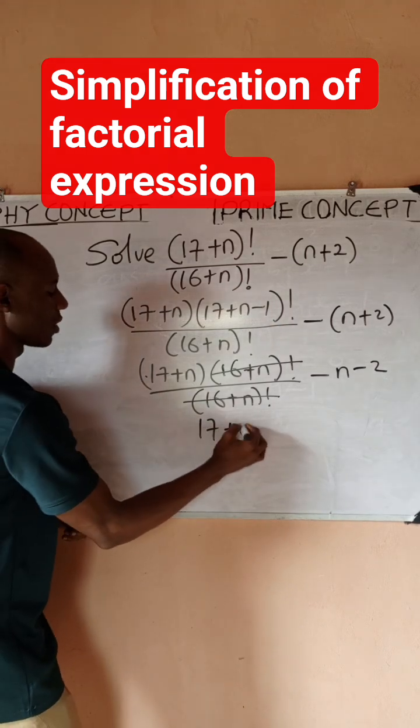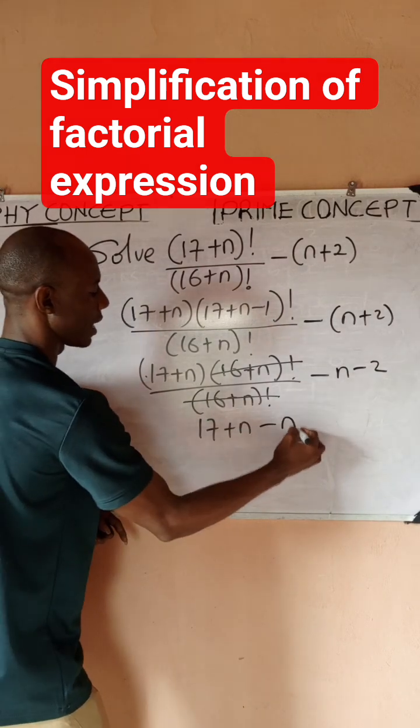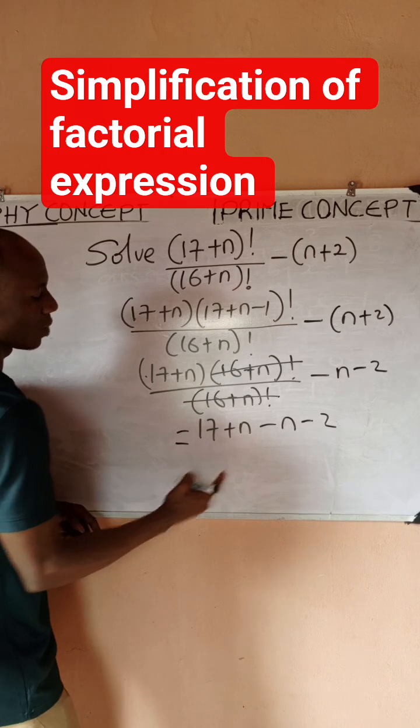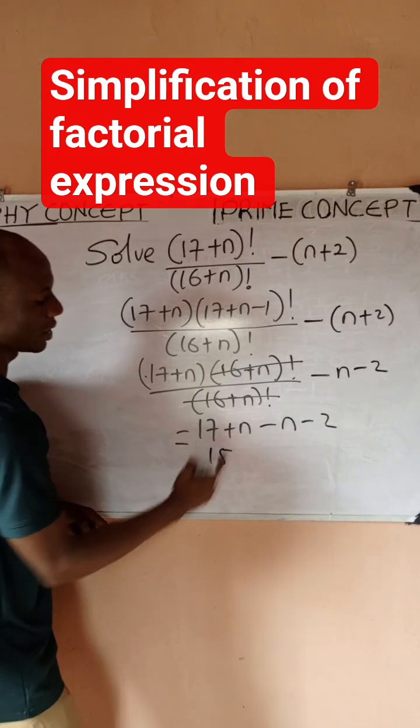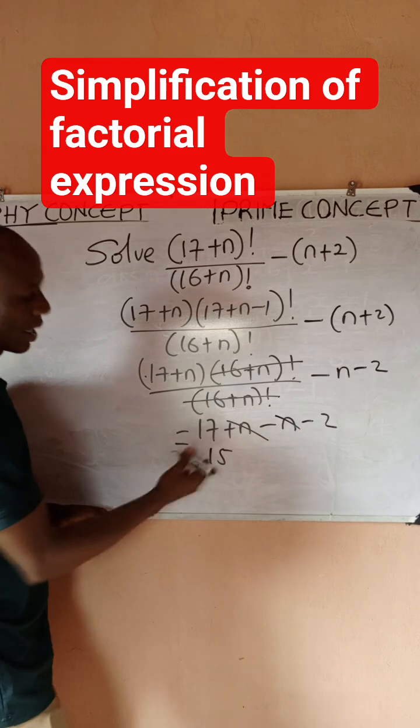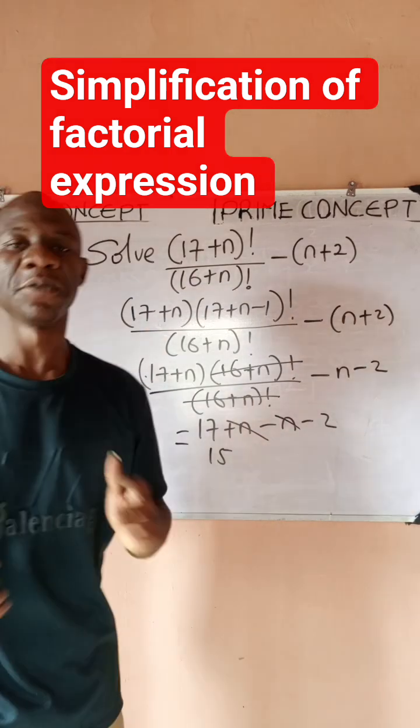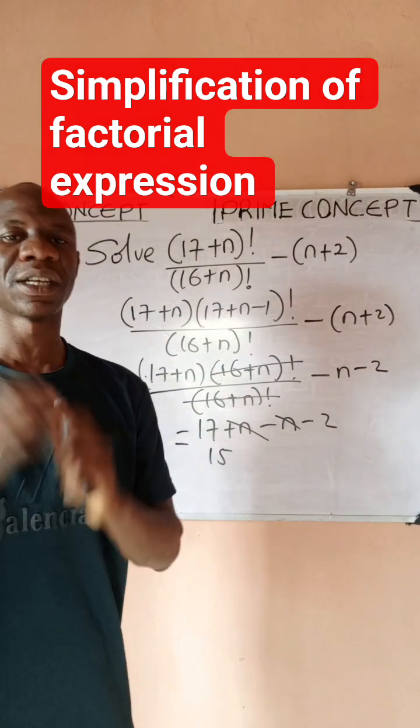So what do I have? I have 17 minus 2 is 15. This would go, and this becomes my answer: 15. I believe this is really very clear to you.